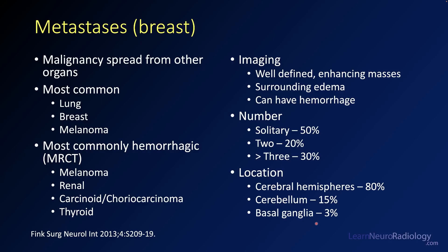So in this case, this was a case of breast metastatic disease to the brain. Metastatic disease is when you have a spread of cancer from another organ. When we see it in the brain, it's most commonly arising from lung, breast, or melanoma. There's an acronym for which are most likely to be hemorrhagic — think MRI and CT: melanoma, renal, carcinoid or choriocarcinoma, and thyroid.